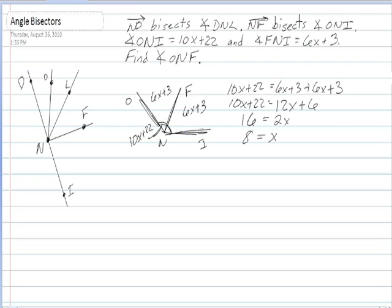Now, x equals 8 isn't our answer. The question asked us to find angle ONF. So what we have to do then is go back and say, what was angle ONF? Well, angle ONF is the same as angle FNI. FNI is 6x plus 3.